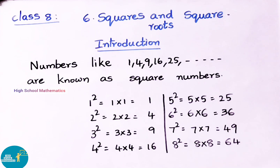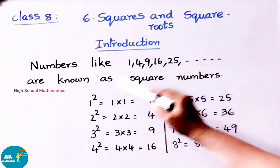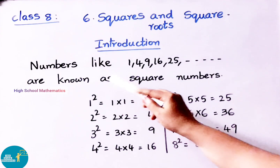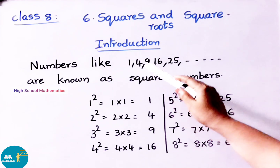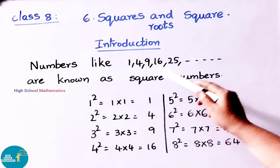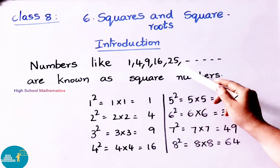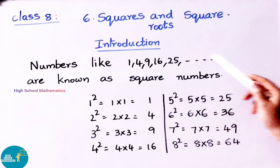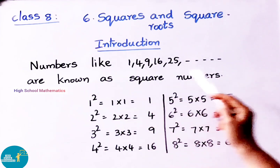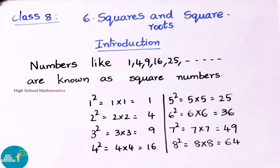First let us see the introduction. Numbers like 1, 4, 9, 16, 25 and so on are known as square numbers.